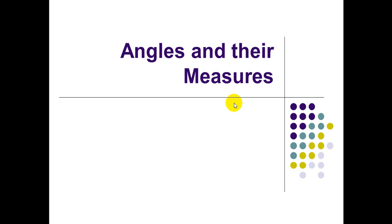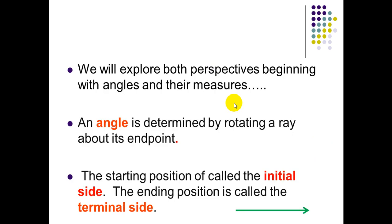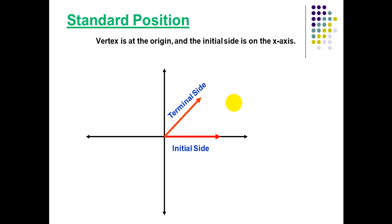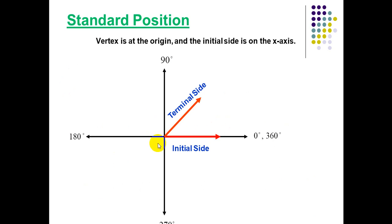Hello, Grade 12. Our lesson today is about angles and zero measure. An angle is determined by rotating a ray about its endpoint. The starting position is called the initial side, and the ending position is called the terminal side. Standard position for any angle: the vertex is at the origin and the initial side is on the positive x-axis, as shown in the figure.